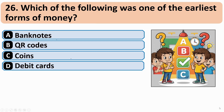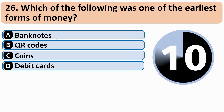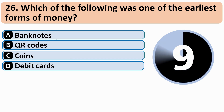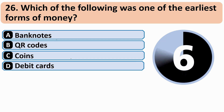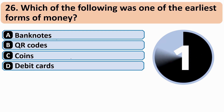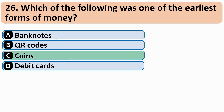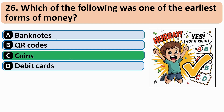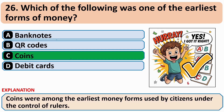Which of the following was one of the earliest forms of money? The correct answer is C — Coins.